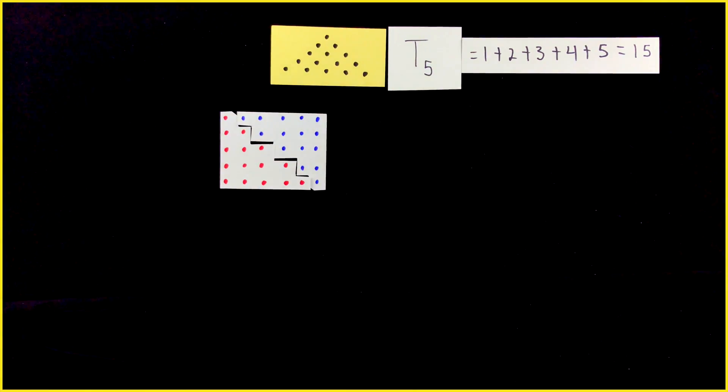Check this out. We draw our triangular number as a right triangle. In this case, we have T5. Copy it, spin it around 180 degrees, and bam.